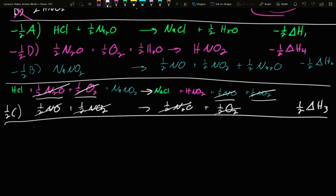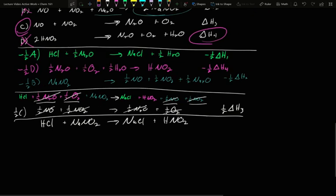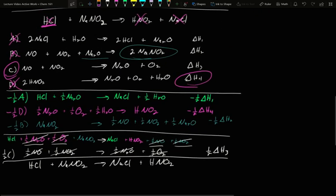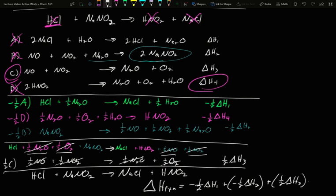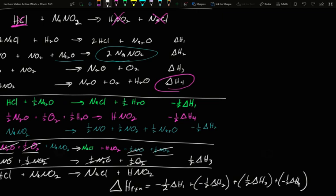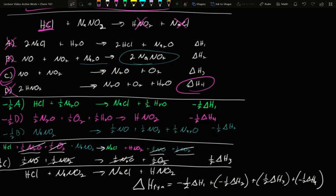At the end, these will balance out to give us HCl plus NaNO2 goes to NaCl plus HNO2, which was our original target reaction. What is our delta H then? It is negative one half of delta H1 plus negative one half of delta H2 plus positive one half of delta H3 plus negative one half of delta H4. We merely have to do the same changes to the enthalpies of each of those reactions as we did to the reaction.